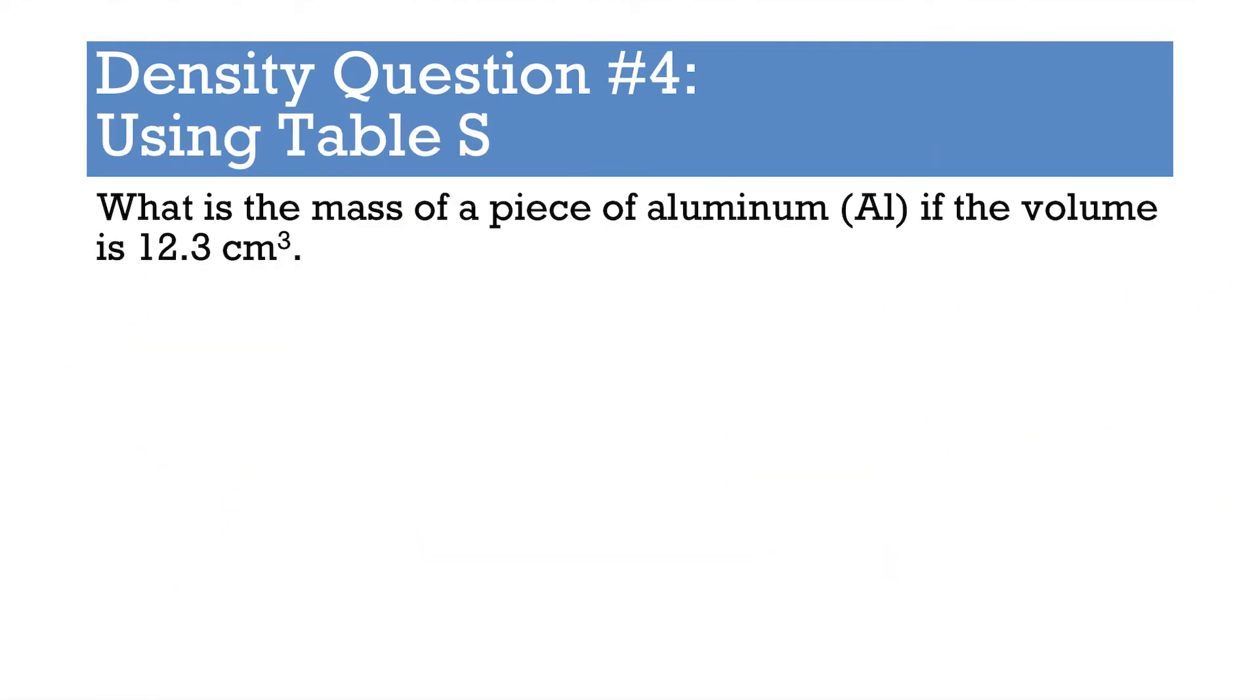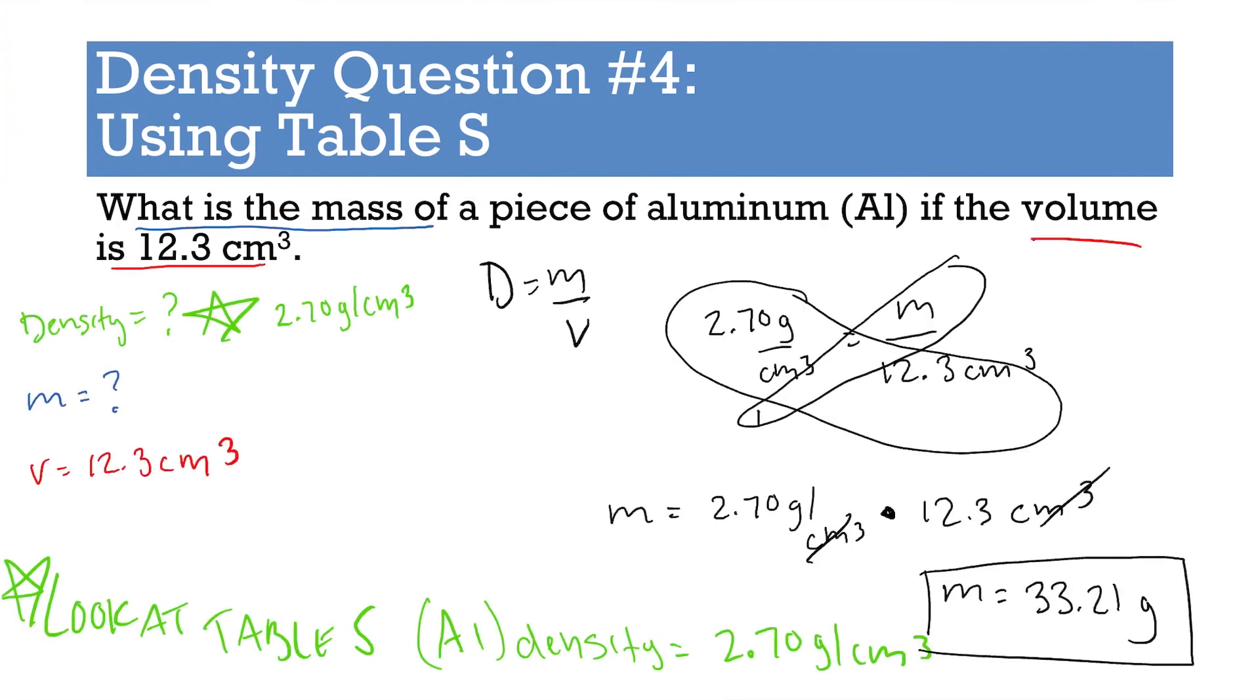Okay, last question. What is the mass of a piece of aluminum if the volume is 12.3 cm³? Now your hint here, use Table S, because when you list all of your variables, you'll notice that you are missing something. You are missing density and you're not able to calculate it from the question, but your hint was to use Table S. So Table S says aluminum's density is 2.7, so if you use that and plug everything in, you get your mass to be 33.21 grams.